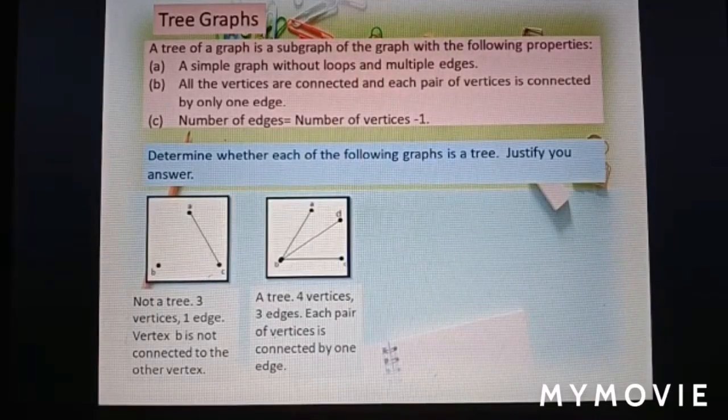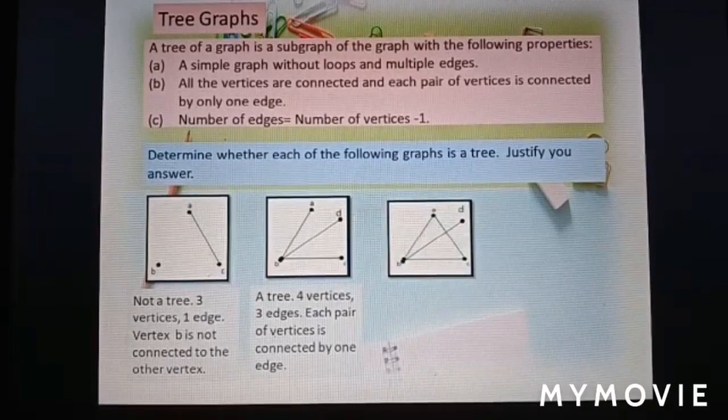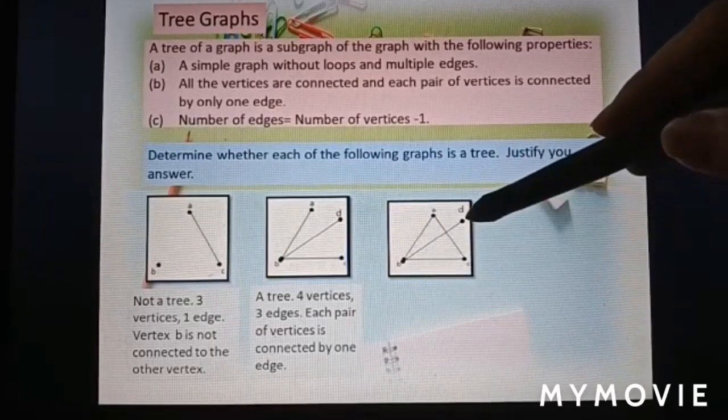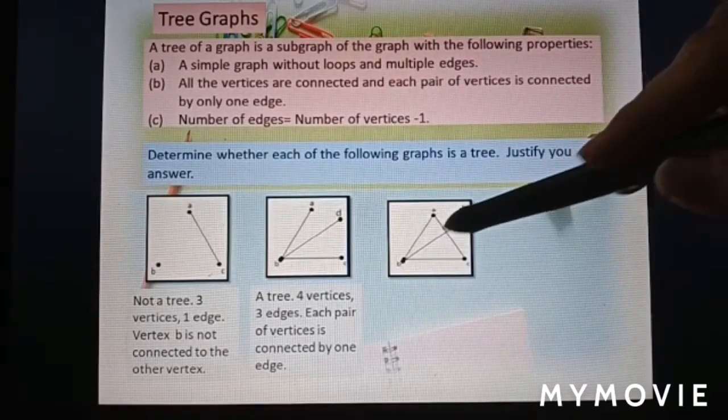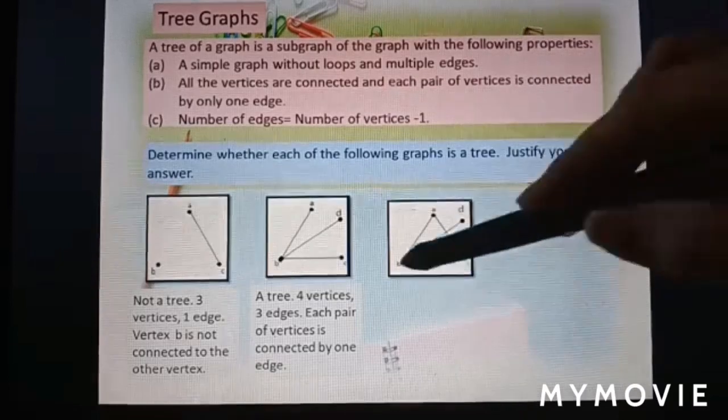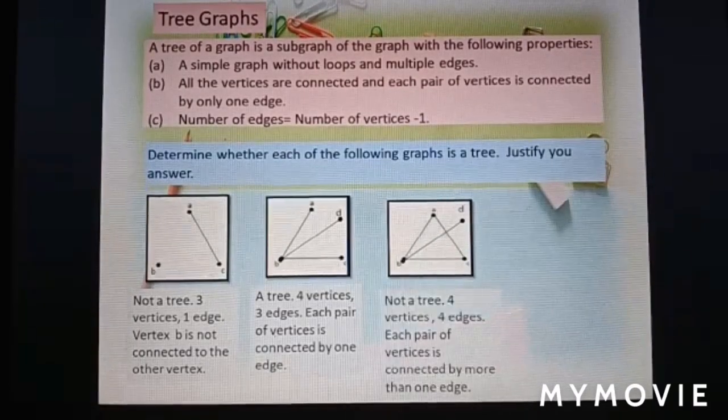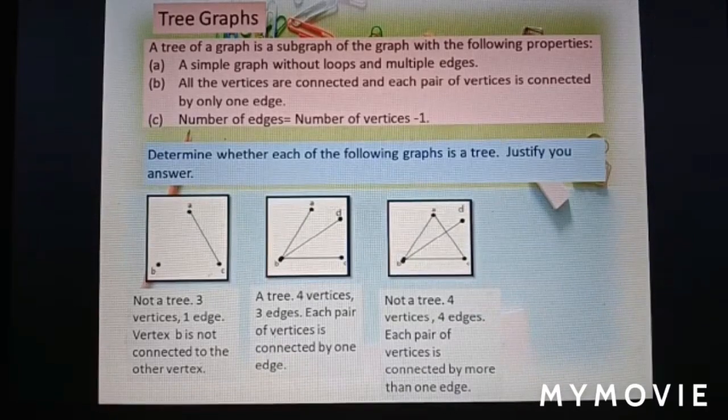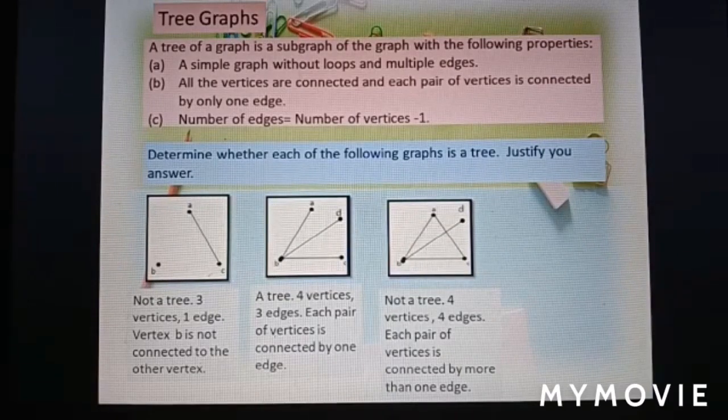Now we look at the third diagram. All together 4 vertices. So 4 minus 1 equals 3 edges. We count how many edges here: 1, 2, 3, 4. So confirmed, not a tree graph. 4 vertices and 4 edges. Each pair of vertices is connected by more than 1 edge.